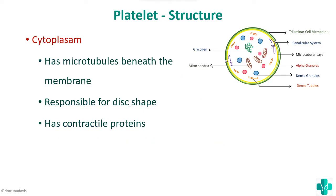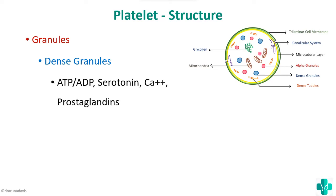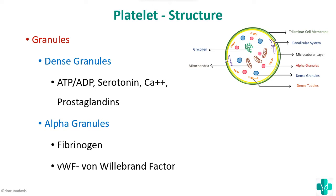Regarding the cytoplasm: it contains a microtubular layer just beneath the membrane, which is responsible for the disc shape. It also has contractile proteins that help platelets in contraction. The cytoplasm contains dense granules and alpha granules. Dense granules contain ATP, ADP, serotonin, calcium, and prostaglandins. Alpha granules contain many substances, but the most important are fibrinogen and von Willebrand factor.